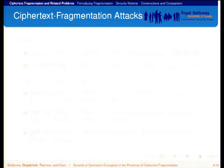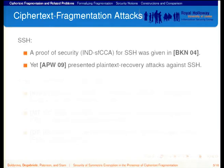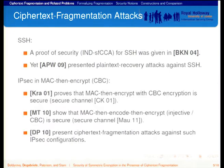Here are two examples of ciphertext fragmentation attacks. The first case was SSH, where a proof of security was first given by Bellare and Namprempre in 2004. Yet in 2009, Albrecht, Patterson, and Watson presented an attack that was able to recover plaintext from SSH.